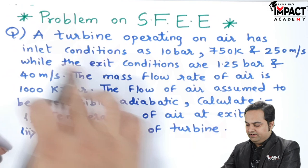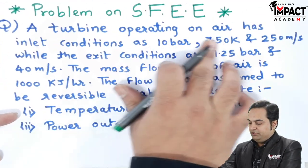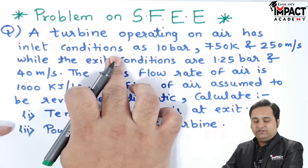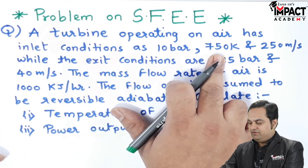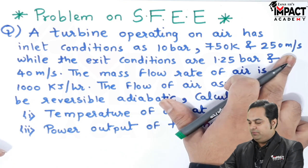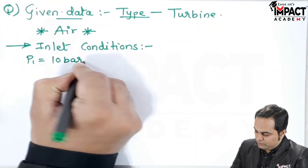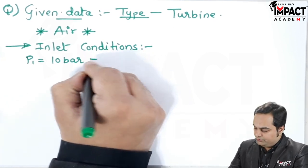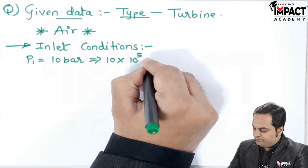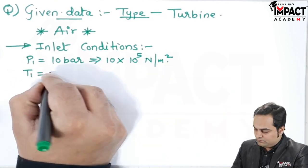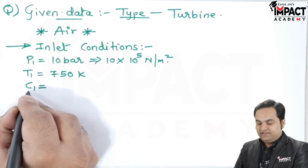It is given that a turbine operating on air has inlet conditions as 10 bar. This is the inlet pressure, temperature 750 Kelvin, and 250 meter per second is the inlet velocity. Pressure is 10 bar — I will convert it into Newton per meter square by multiplying with 10 raised to 5. Inlet velocity is denoted as C1.